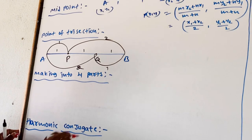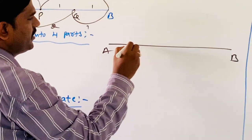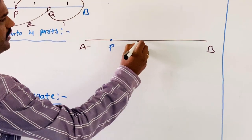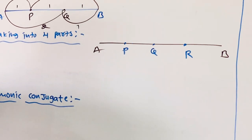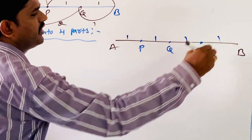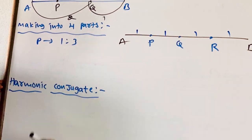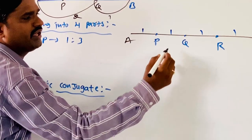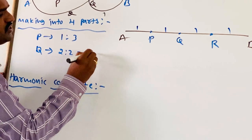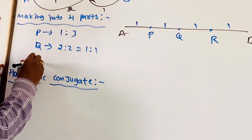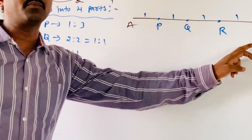The next case is dividing into 4 equal parts. AB is a line segment where P, Q, R are points on AB dividing it into 4 equal parts. P divides AB internally in the ratio 1 to 3. Q is the midpoint of AB, so Q divides AB in the ratio 2 to 2, which equals 1 to 1. R divides AB in the ratio 3 to 1. A, P, Q, R, B are collinear points in each and every case, lying on the same line segment.